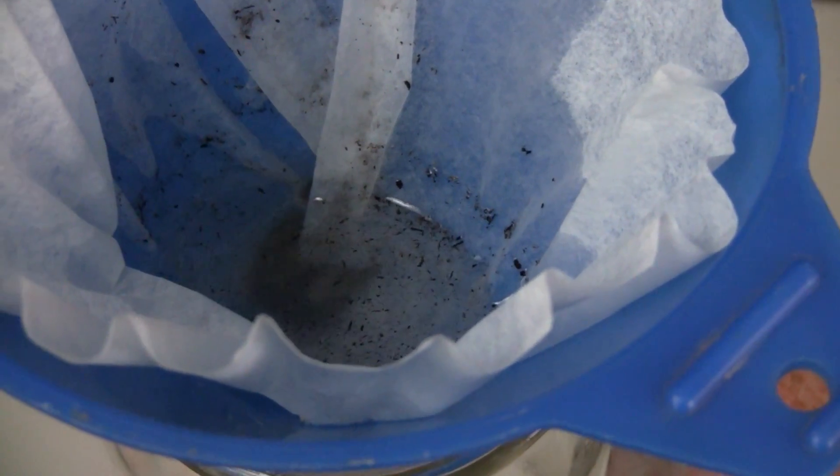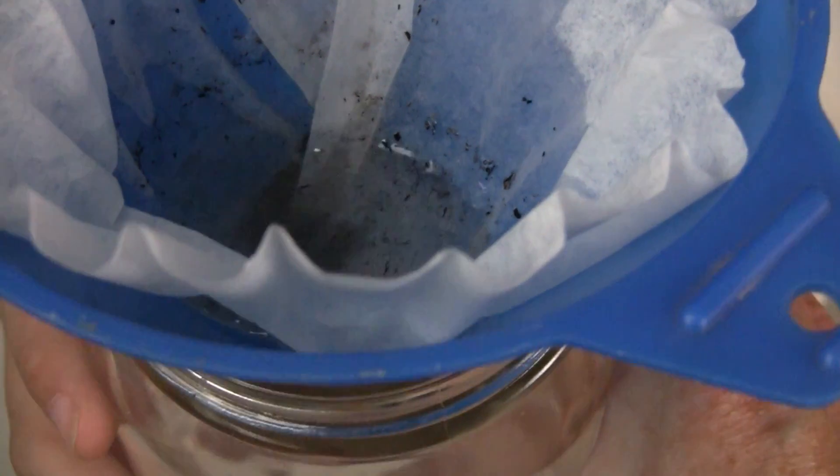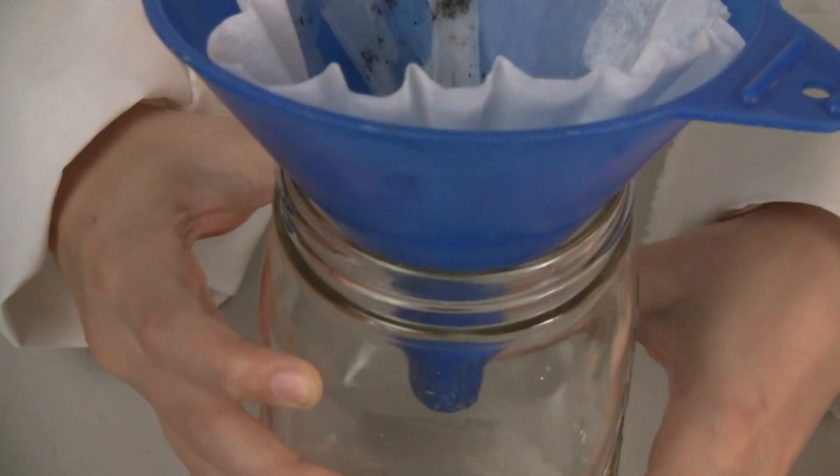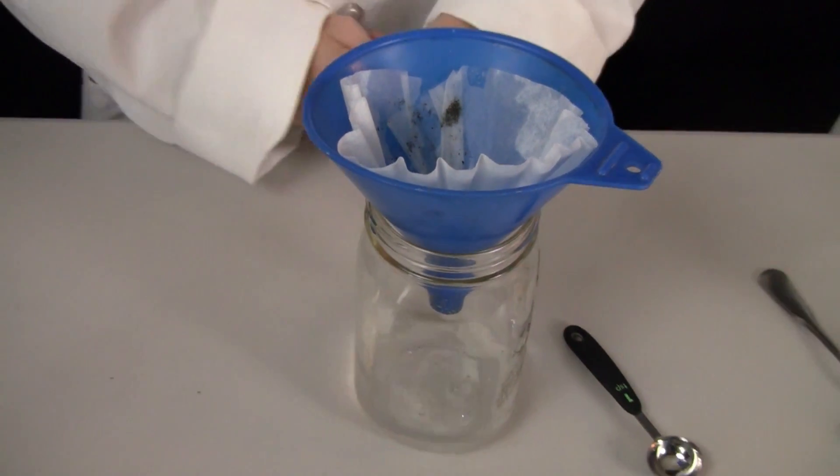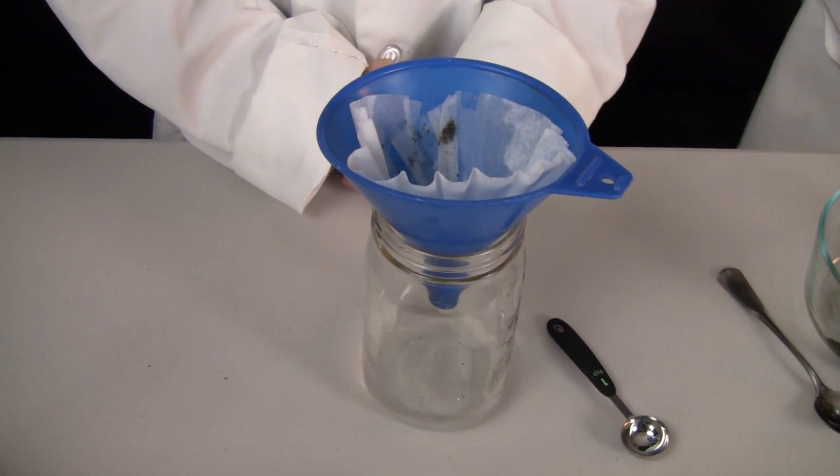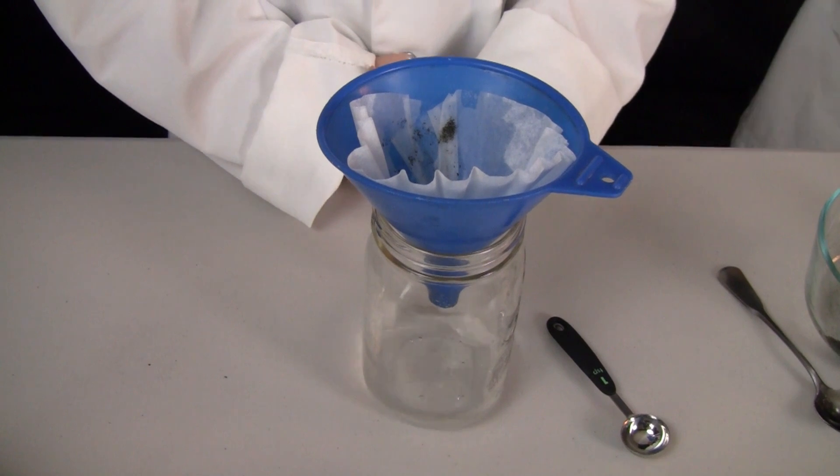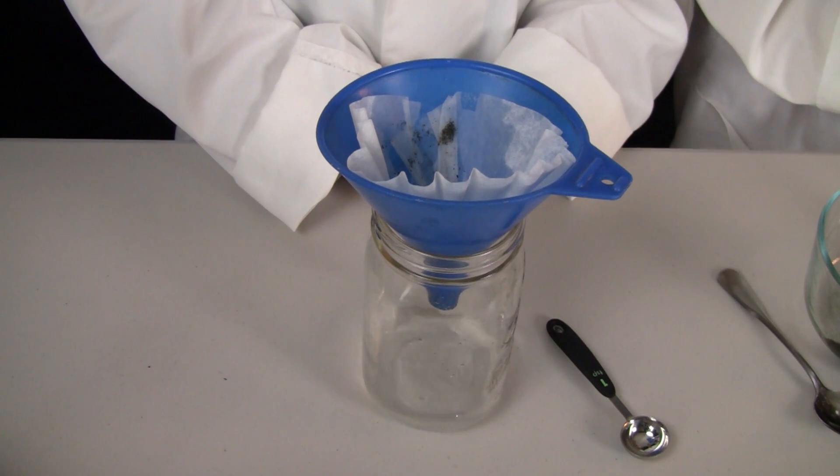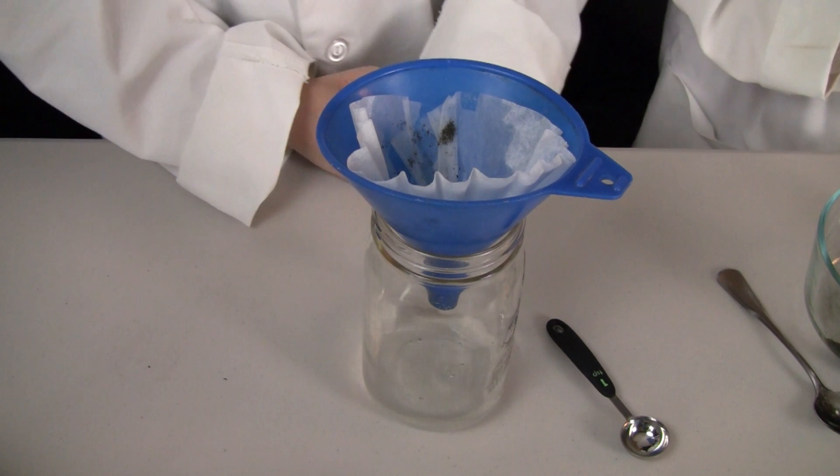As you can see, the water is going through the filter, and the sand is not. So, it's dripping down into the mason jar. And something has probably gone through this filter paper. What do you think is going through the filter paper besides the water? The salt?